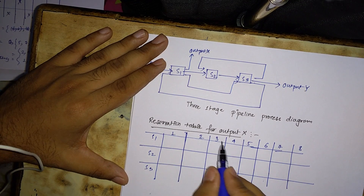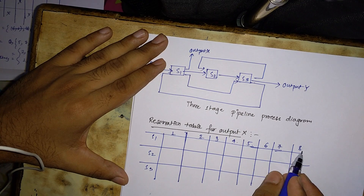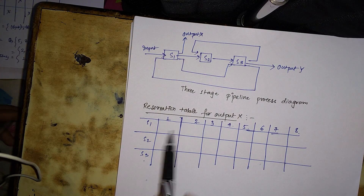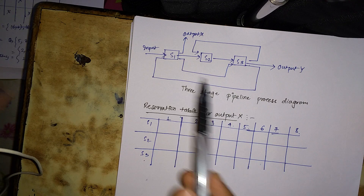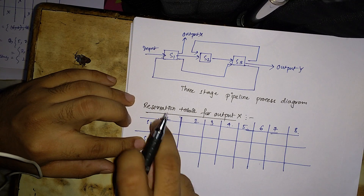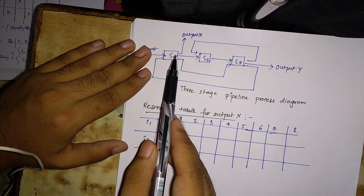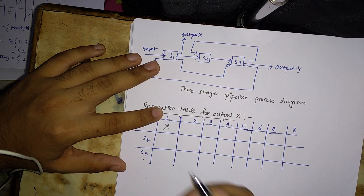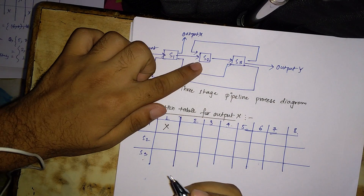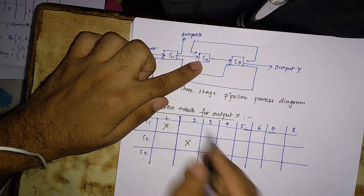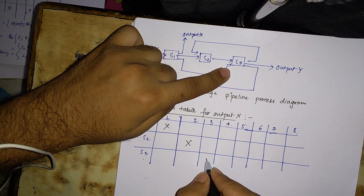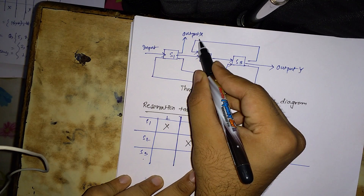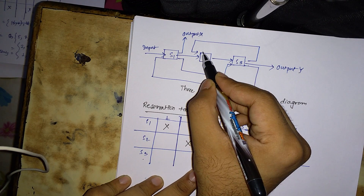The clock cycles are 1 through 8, corresponding to the stages. The first task is performed at stage S1 in clock cycle T1. Then from S1 it goes to S2 in time T2, and from S2 it goes to S3 in time T3.